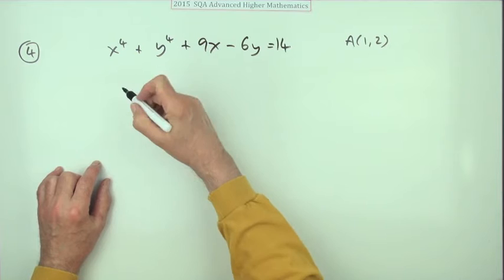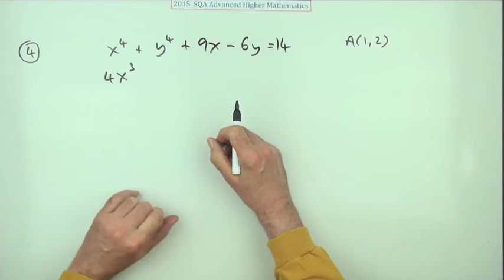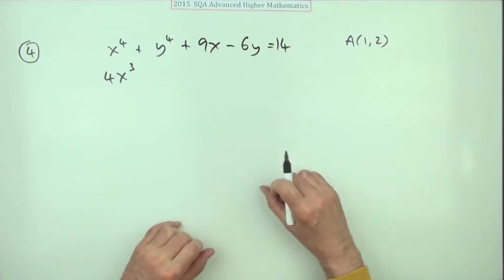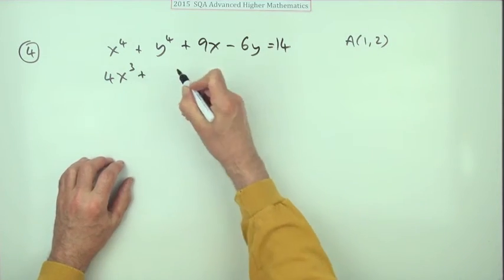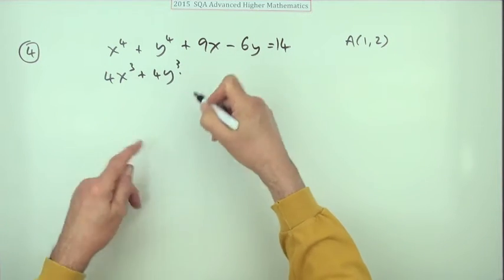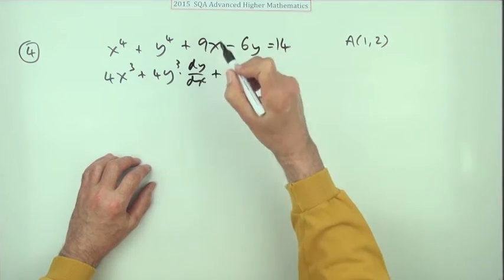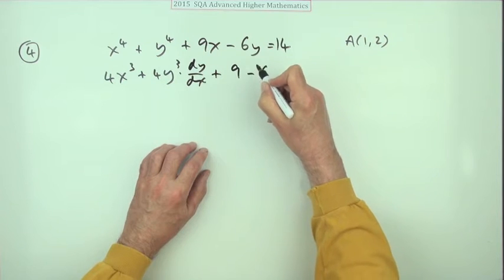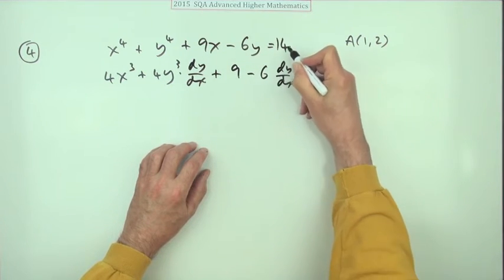The first part is differentiate this. Well, x term straightforward: 4x³. But y is a function of x, it just couldn't be written that way explicitly so it was given implicitly, but it is a function of x. So it'll be 4 times the y³, but then multiplied by the derivative of y with respect to x. The nine, straightforward 9x is just nine, but that'll be minus 6 times the derivative of y with respect to x.